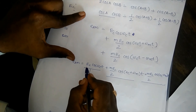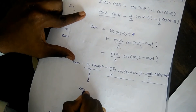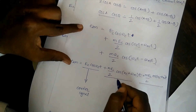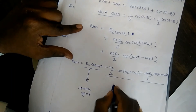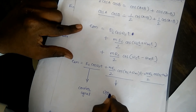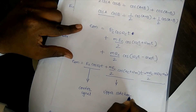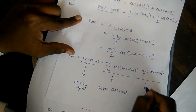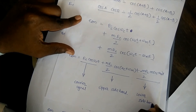The first section, EC cos(ωc t), represents the carrier signal. The second part, having a plus sign, represents the upper sideband. The third section represents the lower sideband.